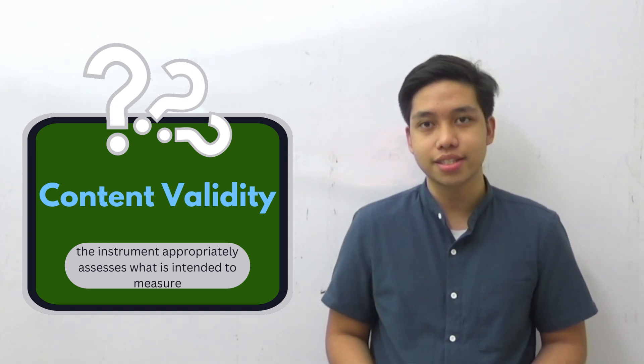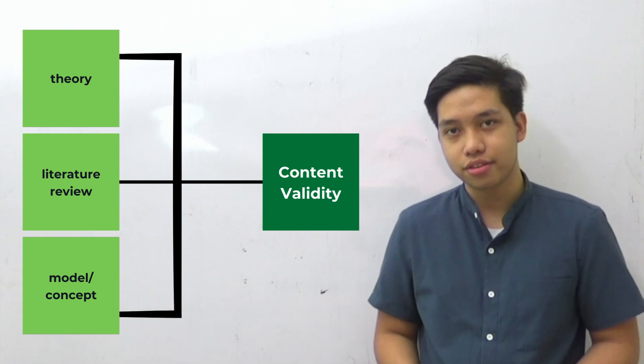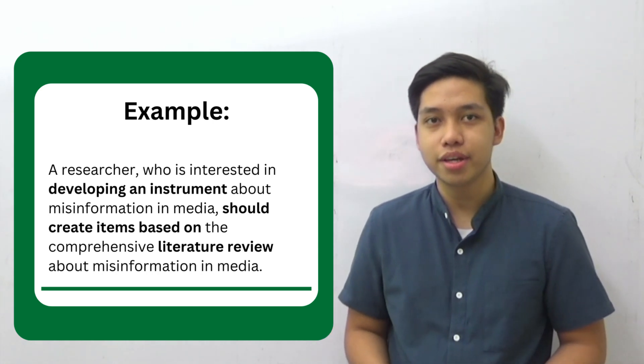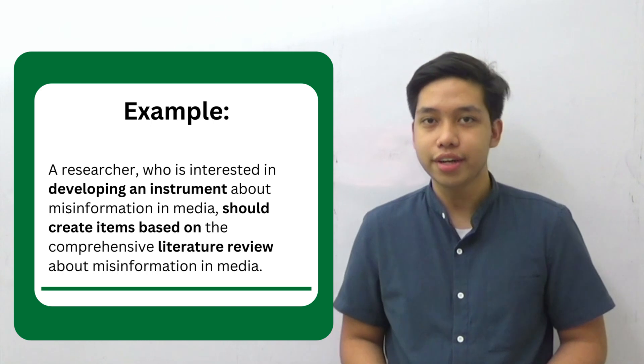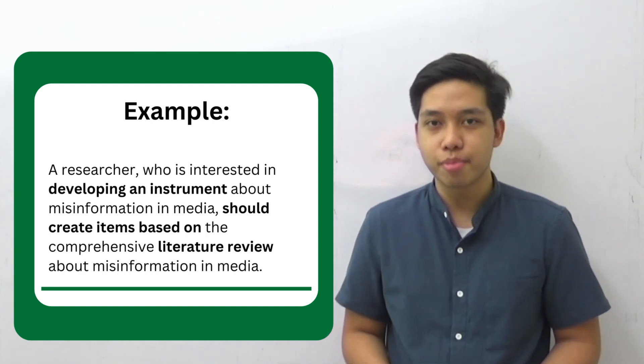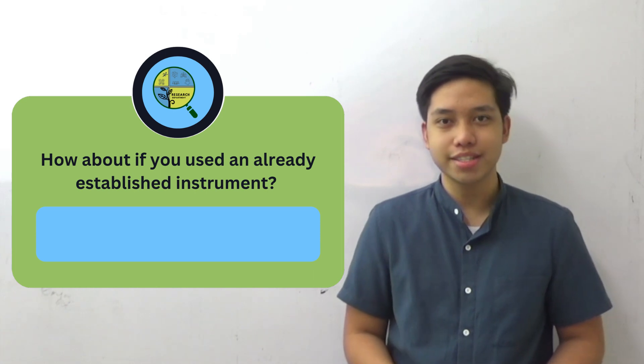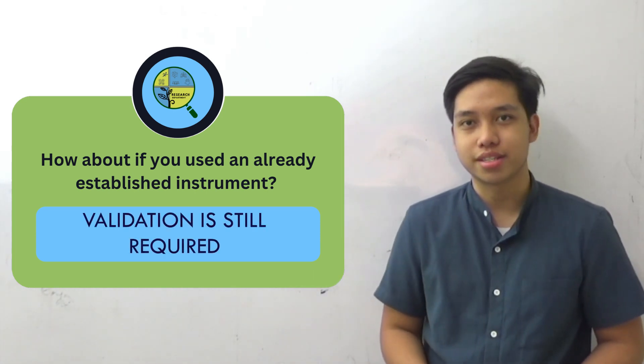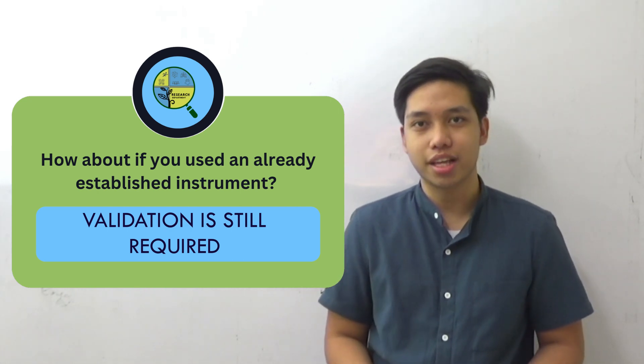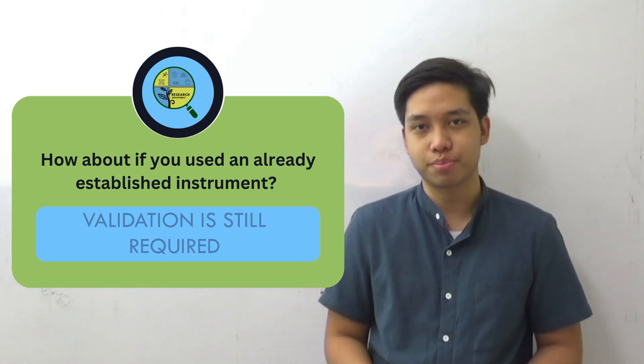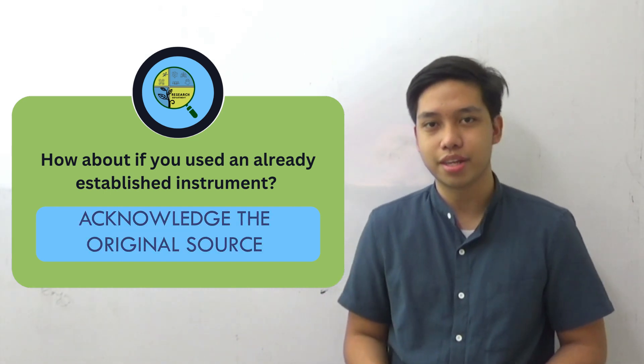Second is content validity. It refers to the extent to which a measure or survey questionnaire thoroughly and appropriately assesses the skills or characteristics it is intended to measure. It does rely on a substantiated theory, concept, or model for support. For example, a researcher developing an instrument about misinformation in media should create items based on a comprehensive literature review about misinformation in media. If you use an already established instrument, you must still undergo this process since there may be instances where you will revise some items to make sure it is more suitable for your respondents. Do not forget to acknowledge the source of the adapted questionnaire.